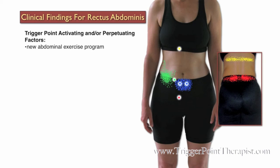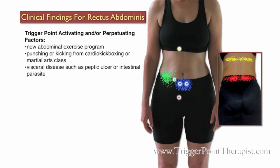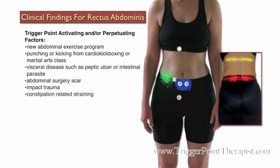Some factors that may activate or perpetuate trigger points in the rectus abdominis muscle include new abdominal exercise programs, punching or kicking from a cardio kickboxing or martial arts class, visceral disease such as peptic ulcer or intestinal parasite, abdominal surgery scars, impact trauma, constipation-related straining, extensive coughing, and emotional stress.